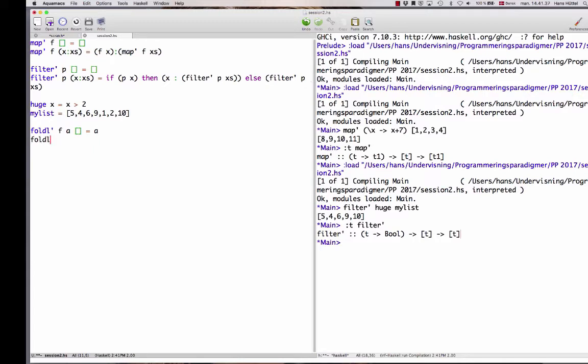If foldl prime is applied to f and the initial value a and a non-empty list of x and some further xs, what do we get? Well, the idea is that first we apply f to a and the first element of the list. And then we take this and we fold with f, and the initial value is now this, and the list for which this is the initial value is the tail xs. So let's take that as our implementation of foldl prime and send this to Haskell.